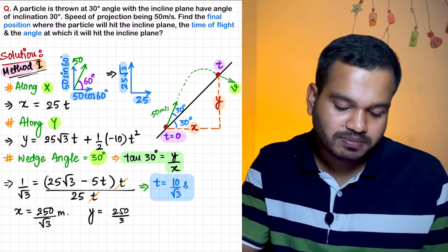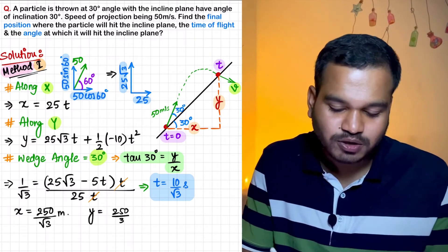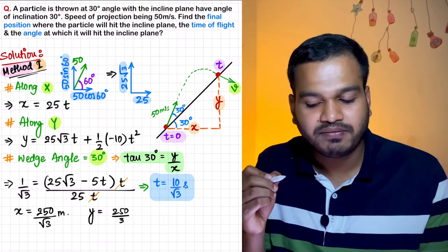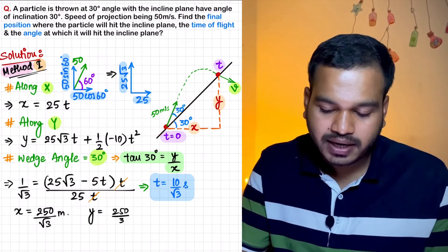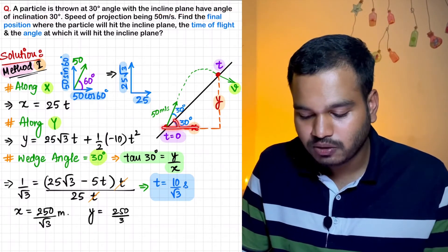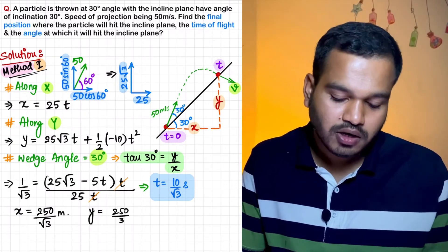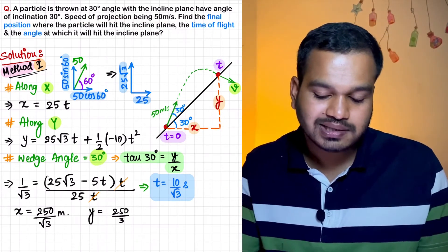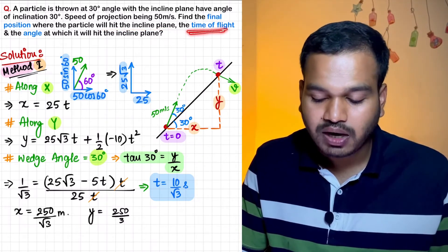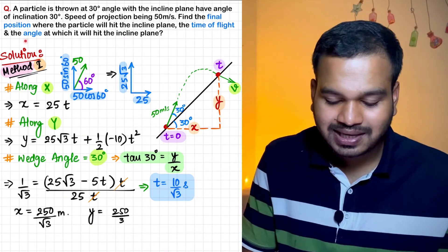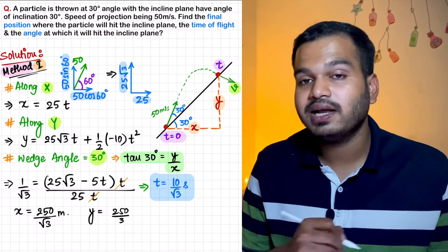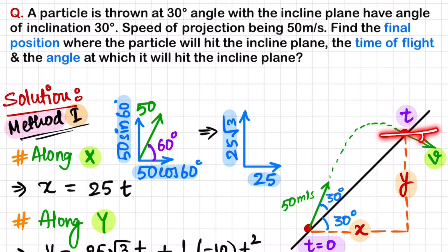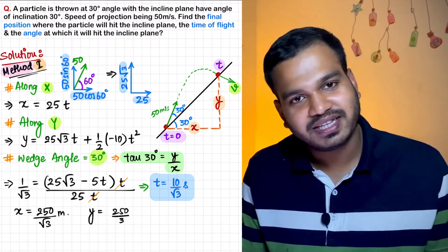I hope you've solved the question. Let's see how to do it. A small particle is projected at 30 degrees with the inclined plane. The inclined plane has an angle of inclination of 30 degrees. Speed of projection is 50 m/s. Find the final position where the particle hits the inclined plane, the time of flight, and as a twist — the angle at which it hits the inclined plane. We will find that angle with respect to horizontal.